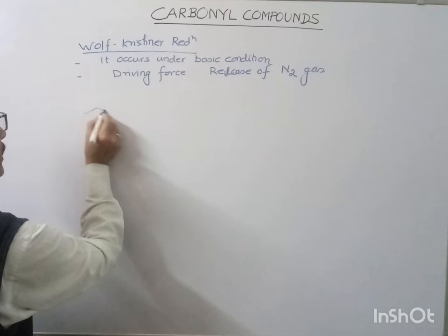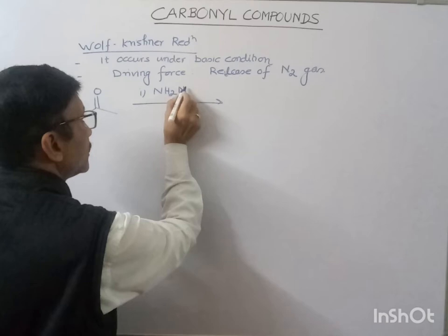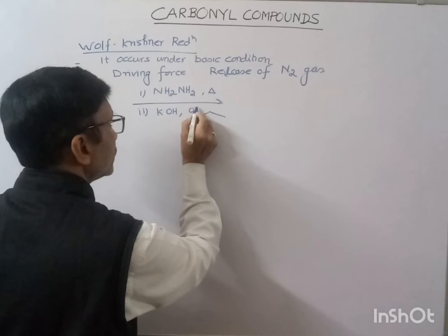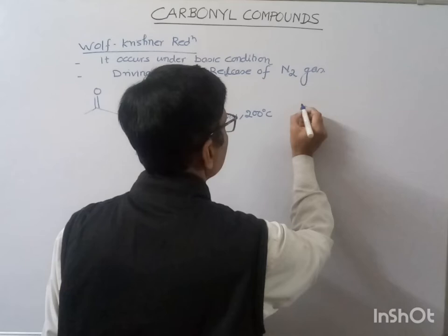Now, suppose if we have any carbonyl compound, then in the presence of hydrazine, if we heat this in the presence of hydrazine and KOH in ethylene glycol at around 200 degrees Celsius — that is high temperature — then this will give you the reduction product.